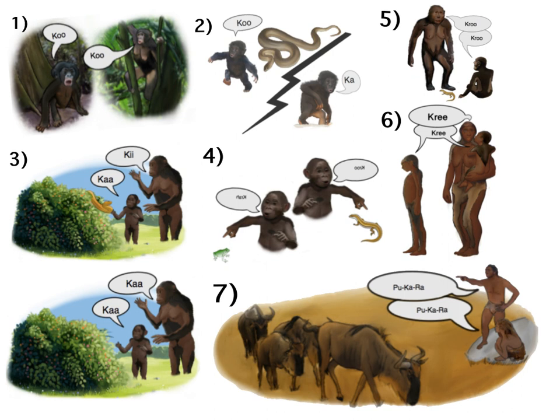Many argue that the origins of language probably relate closely to the origins of modern human behavior, but there is little agreement about the implications and directionality of this connection. This shortage of empirical evidence has led many scholars to regard the entire topic as unsuitable for serious study. In 1866, the Linguistic Society of Paris banned any existing or future debates on the subject, a prohibition which remained influential across much of the Western world until late in the 20th century.